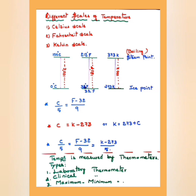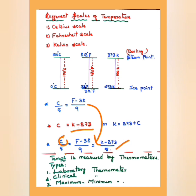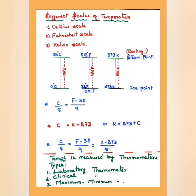The formula relating all three scales is: C/5 = (F − 32)/9 = (K − 273)/5. Temperature is measured by a thermometer. There are mainly three types: laboratory thermometer, clinical thermometer, and maximum-minimum thermometer. Mercury is the liquid used in the thermometer.